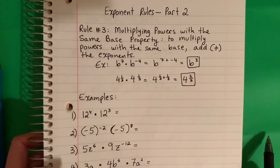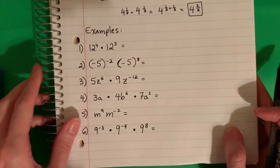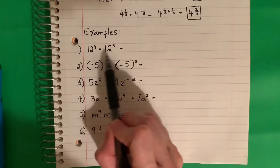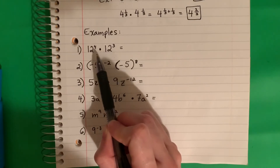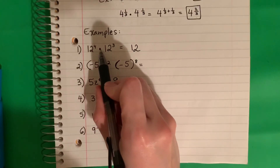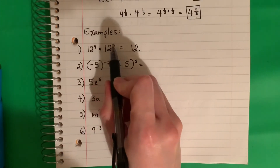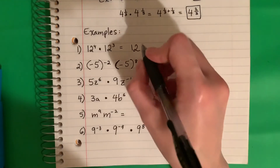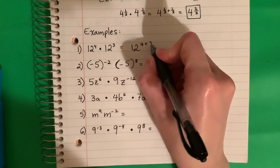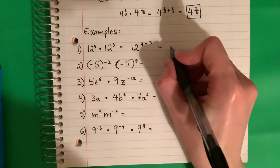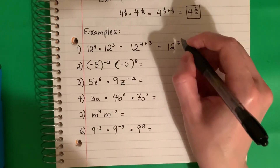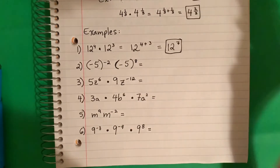Let's go ahead and practice. Here I have the same base, el mismo base — it's 12. So I'm going to copy 12 and it's multiplication, so I'm going to take the exponents and add them, sumar. So 4 plus 3 equals 7. Copy the base, 12, and the exponent 4 más 3 is 7. That's my final answer — easy.